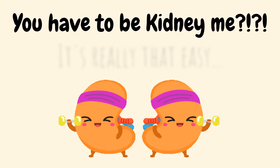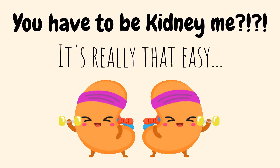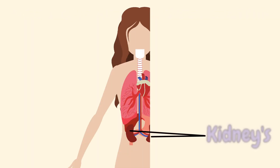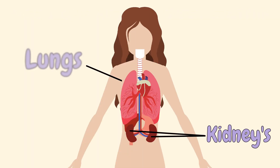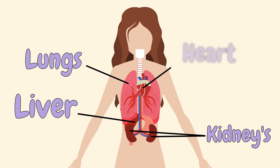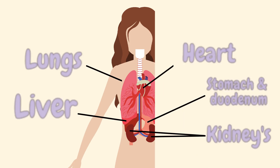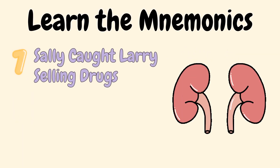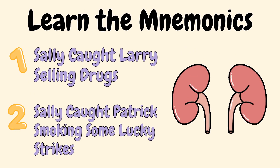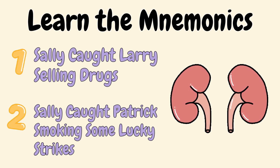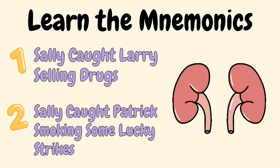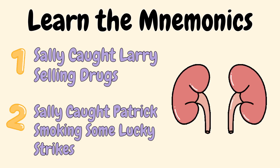You have to be kidney me. It's really that easy? The kidneys sit in pretty close contact with many other abdominal structures. So here are two mnemonics to help you be clinically aware of its relations in the anterior view.